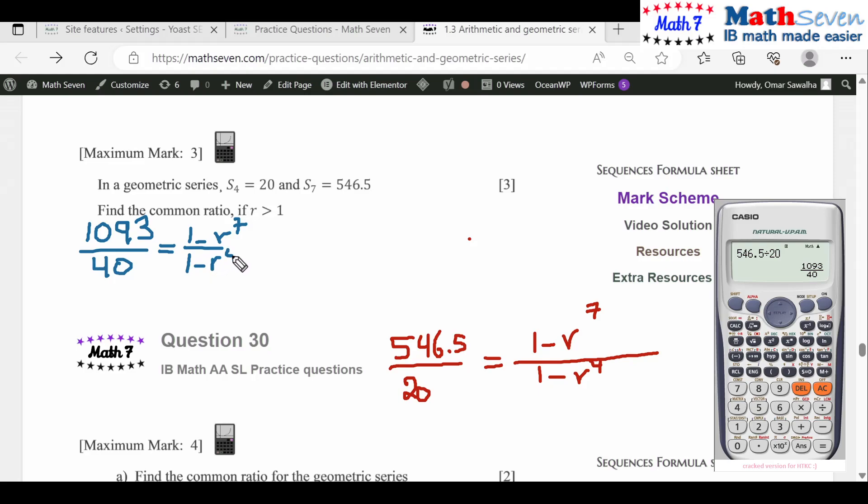So you're going to have 40 minus 40r^7 equals 1093 minus 1093r^4.